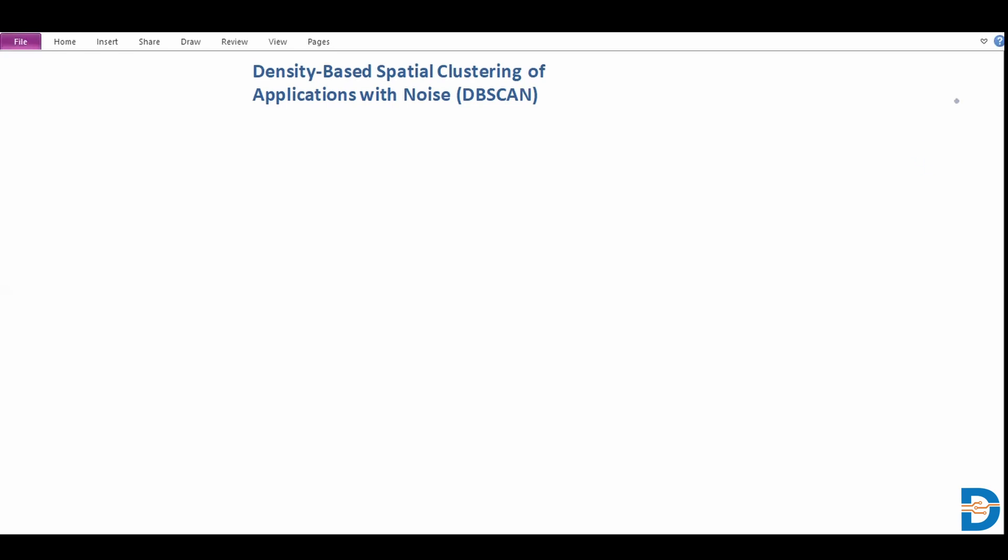So in terms of how DBSCAN works, let's try and understand a few essential traits. We have something that's known as a core point, and when we talk about a certain observation being called a core point, we are essentially saying that within a given radius there are a minimum number of samples defined by a minimum number of samples.